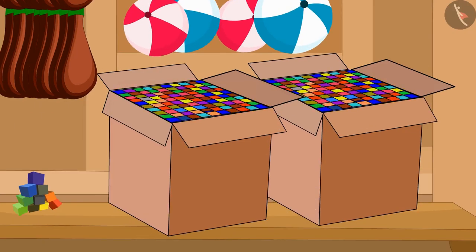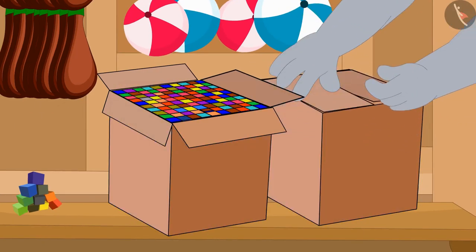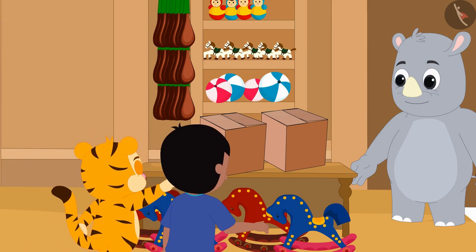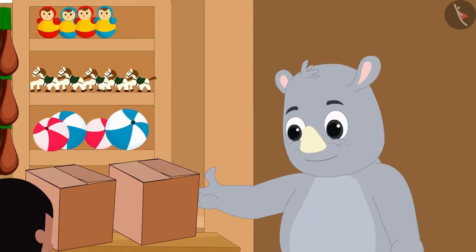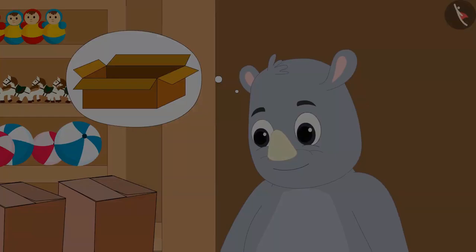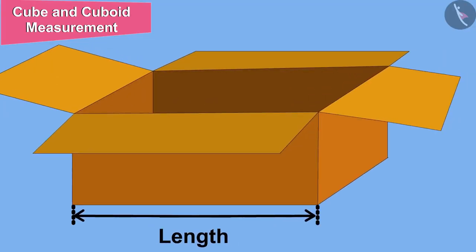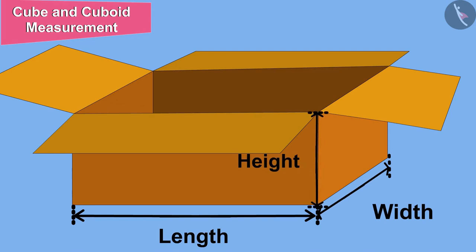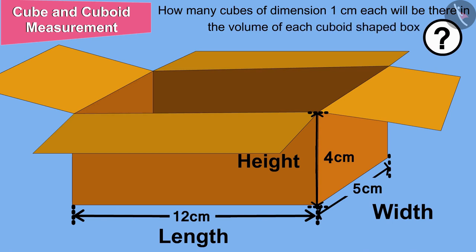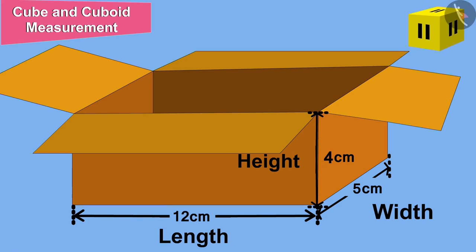Gagoo packed 1000 blocks in the cube-shaped boxes each and started selling them. Within a few days, Gagoo's blocks became famous in the market. Now Gagoo thought that he would sell these blocks in cuboid-shaped boxes. Children, if the length, width, and height of the cuboid-shaped box purchased by Gagoo are as shown, can you tell how many cubes of dimension 1 cm each will be there in the volume of each cuboid-shaped box? You can stop the video and find the answer.